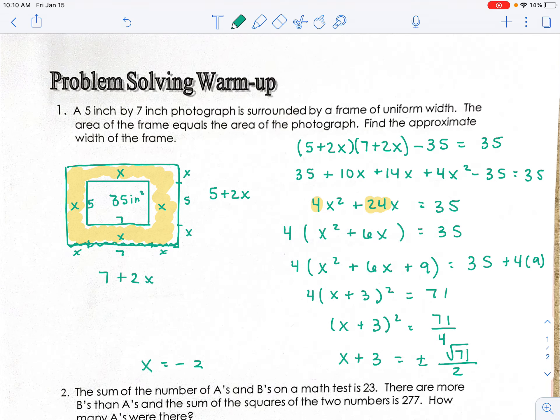Take the square root. Square root of 71 can't be reduced. The square root of 4 is just 2.